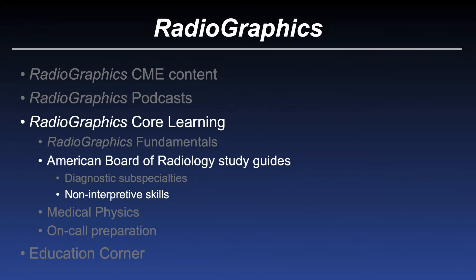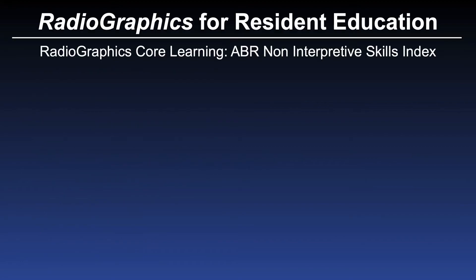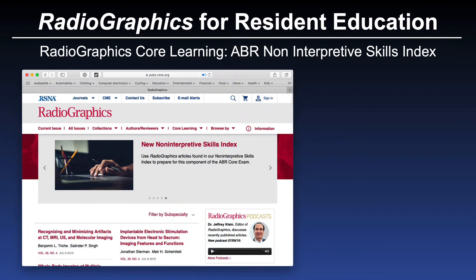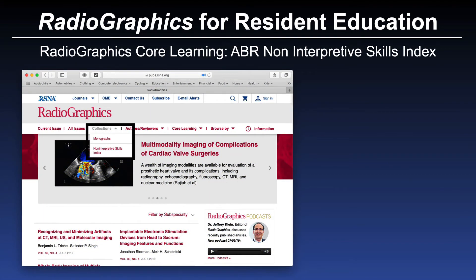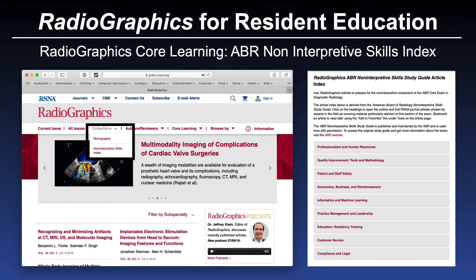In addition to organization by diagnostic subspecialties, there is also a noninterpretive skills index. This does not appear under the Radiographics Core Learning tab, but is found under the Collections tab. Under Collections, you will see monograph issues published over the last 20-plus years, and then the noninterpretive skills index. Choosing that brings you to an index where all journal content related to noninterpretive skills is organized into one of nine areas, according to the American Board of Radiology Noninterpretive Skills Study Guide.